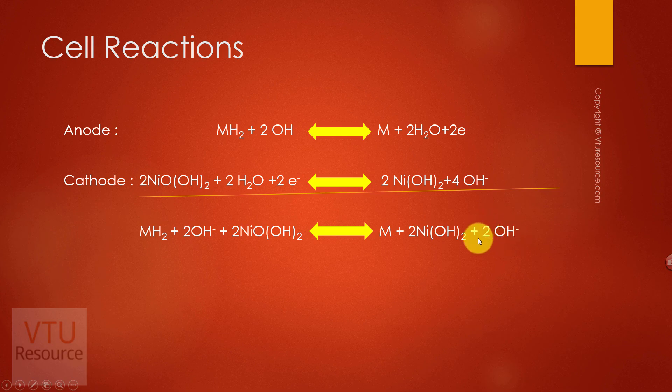Why are we getting two hydroxyl ions here? Because in the anodic reaction two hydroxyl ions are used up, whereas in the cathodic reaction four hydroxyl ions are liberated. Therefore, four minus two is two.